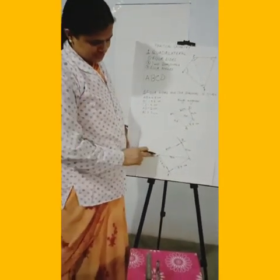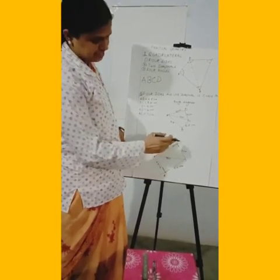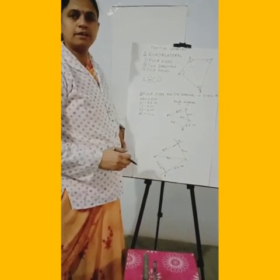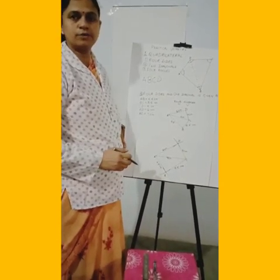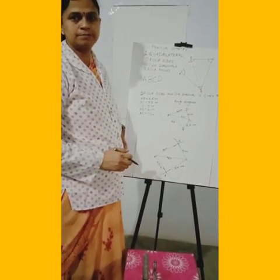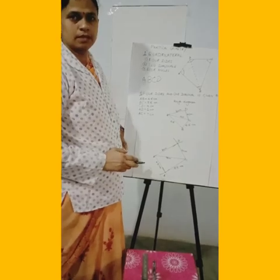You can see that A, B, C, D is the required quadrilateral constructed.